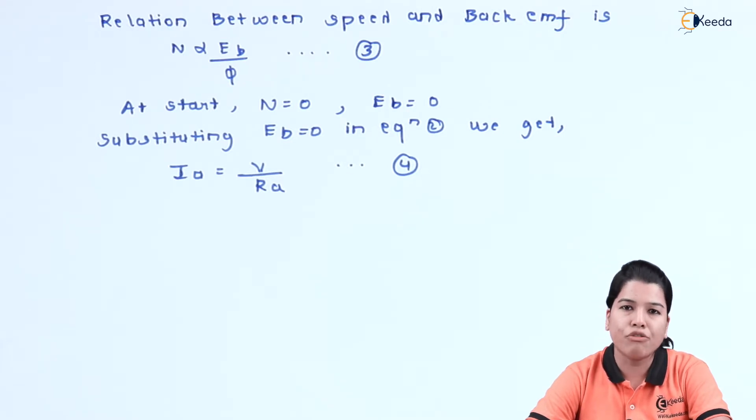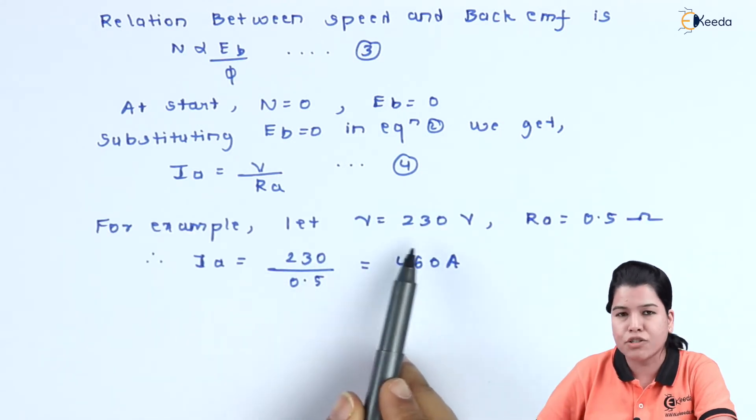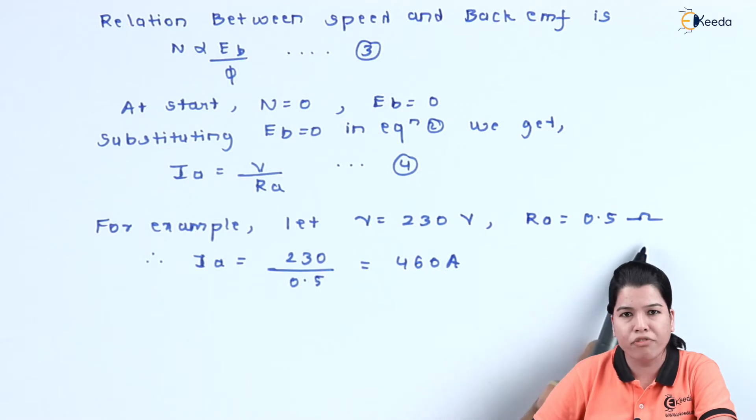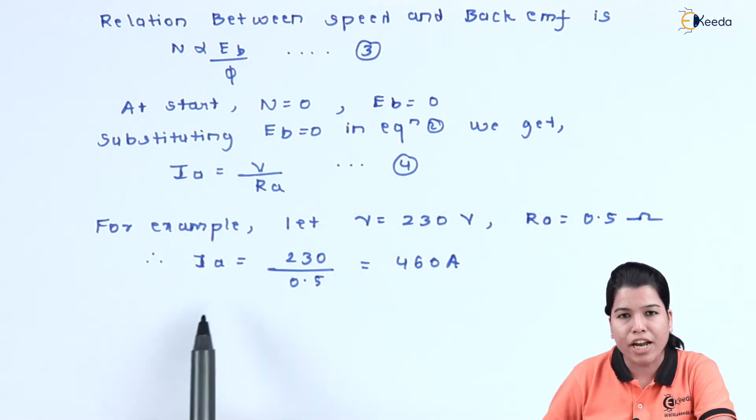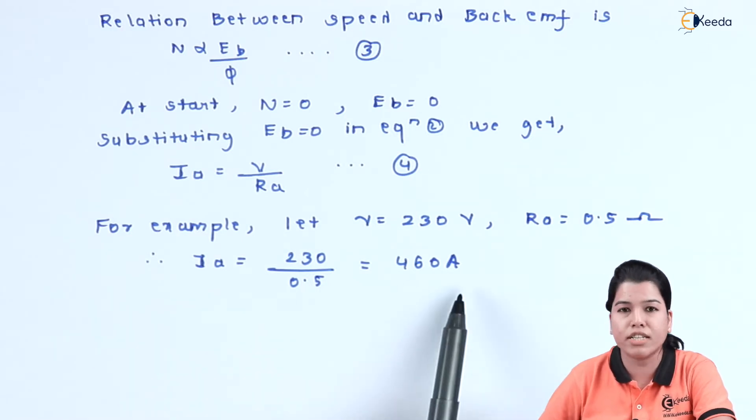For example, if the supply voltage is 230V and the value of armature resistance is 0.5 ohm, then let us see what will be the value of armature current. If the value of V is 230V and the value of Ra is 0.5 ohm, and we substitute these values in equation 4, then the value of armature current will be 460A.